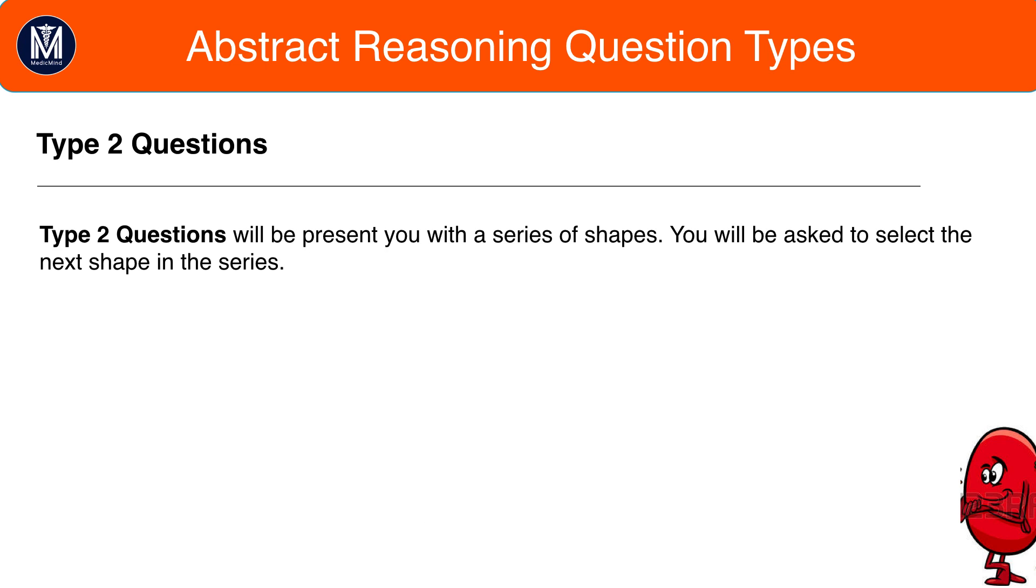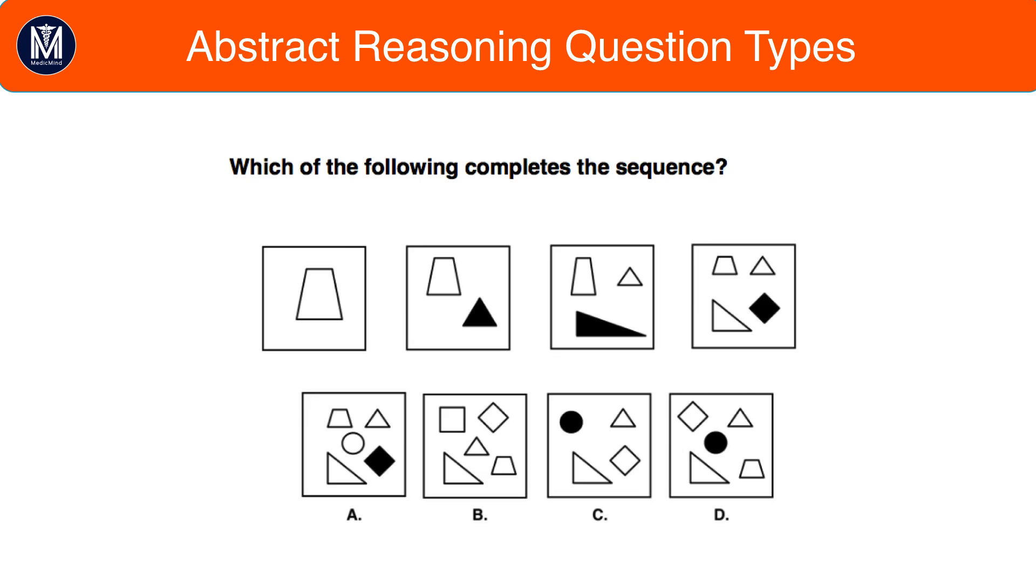Type 2 questions tend to be more rare. In these questions, you get a series of shapes in a sequence and are asked to select the next shape in the series. Let's have a look at this example and try to work out the pattern here.